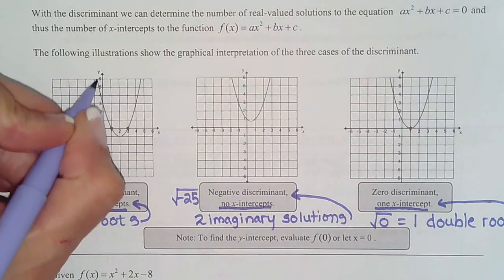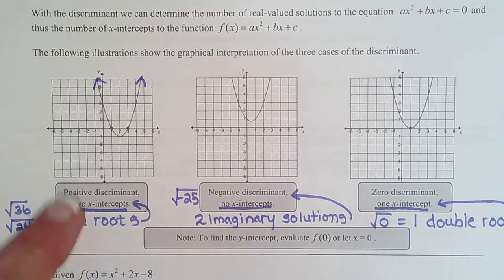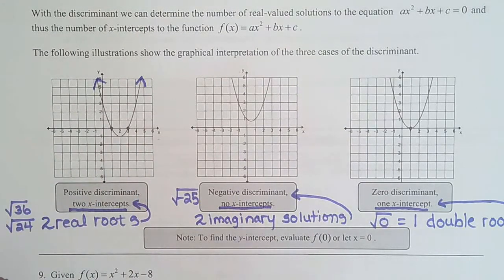And remember, parabolas go on forever. So roots are just x-intercepts. Anytime they're real, that means they're on the number line.